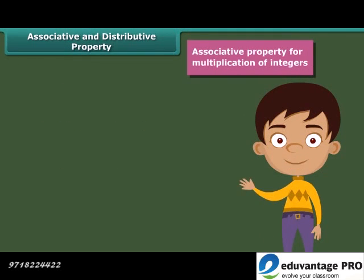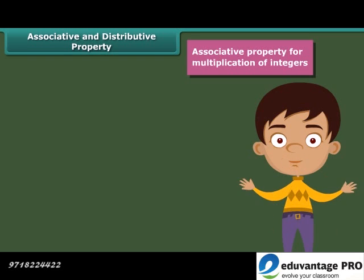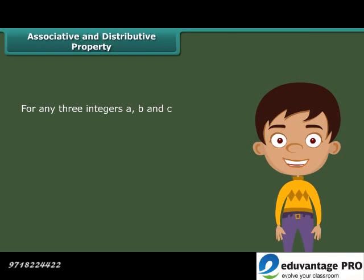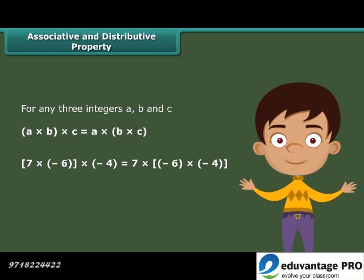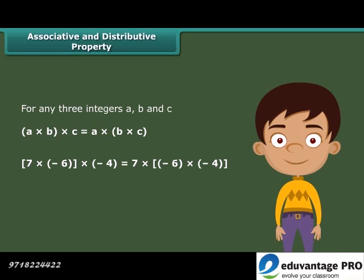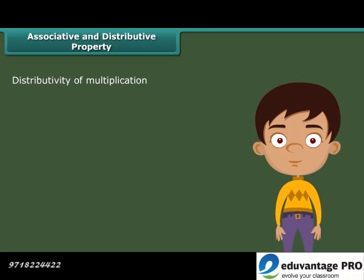The product of three integers does not depend upon the grouping of integers, and this is called the associative property for multiplication of integers. For any three integers A, B and C: (A into B) into C is equal to A into (B into C). For example, (7 into minus 6) into minus 4 is equal to 7 into (minus 6 into minus 4).